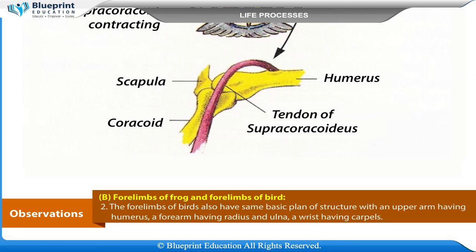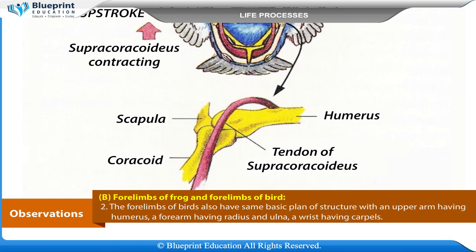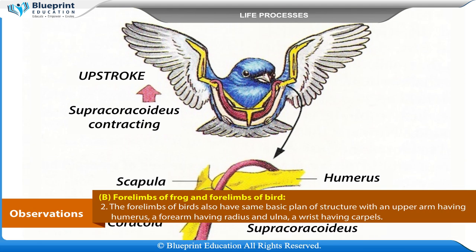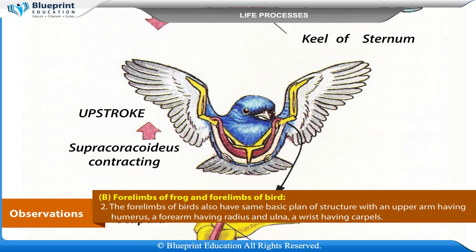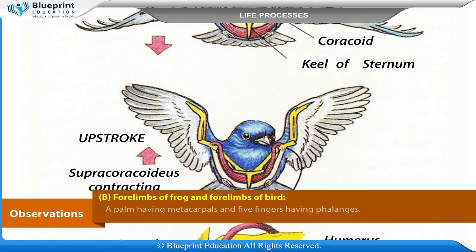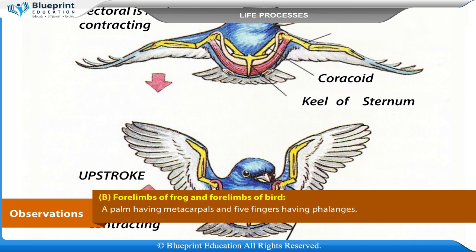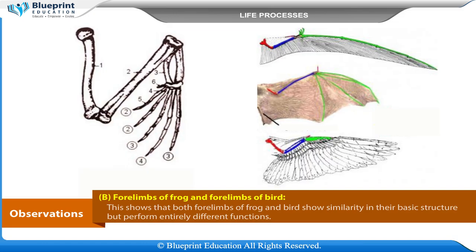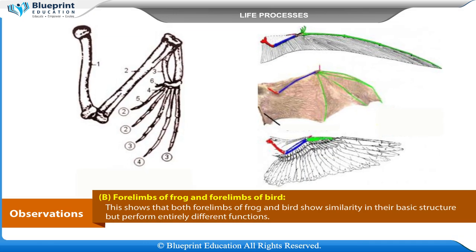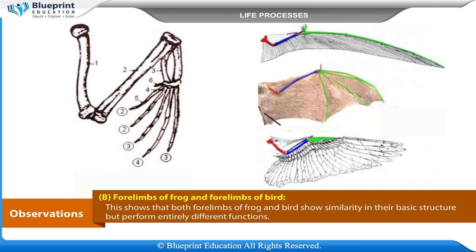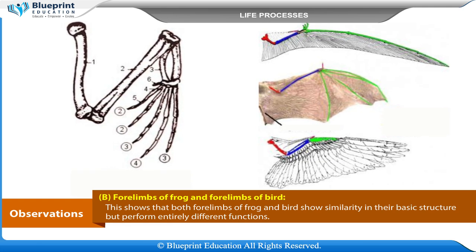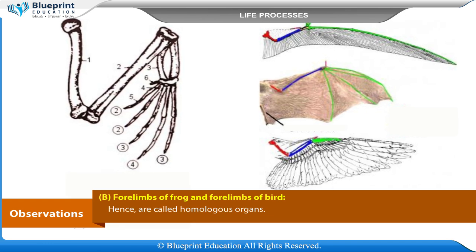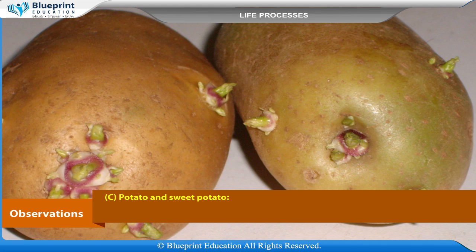The forelimbs of birds also have the same basic plan of structure — an upper arm with humerus, a forearm with radius and ulna, a wrist with carpals, a palm with metacarpals, and fingers with phalanges. The forelimbs of birds help in flying. This shows that both forelimbs of frog and bird share similarity in basic structure but perform entirely different functions, hence they are called homologous organs.